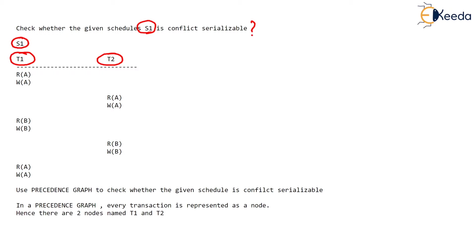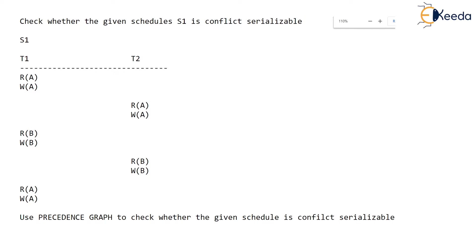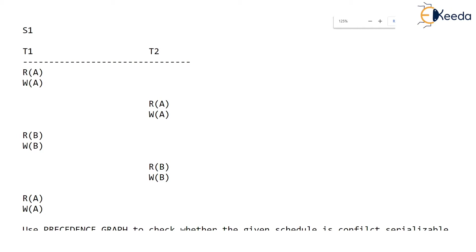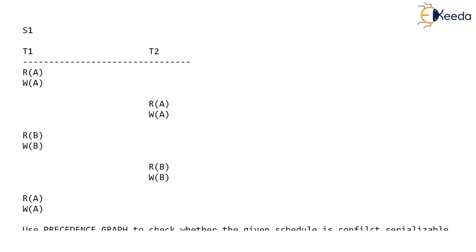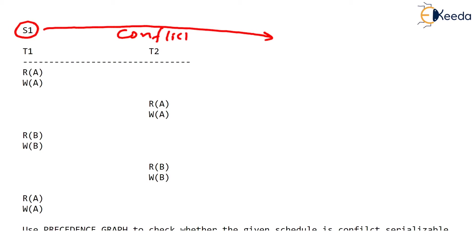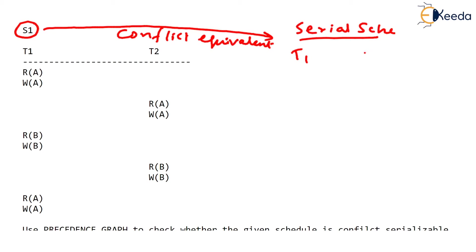Before I prove whether this is conflict serializable or not — which is very easy to prove — I'll tell you the complexity of what is given to us and how difficult it is to solve if you don't get a proper idea to solve this. The question is: is S1 conflict serializable? We say S1 is conflict serializable if it is conflict equivalent with some serial schedule containing the same transactions T1 and T2.